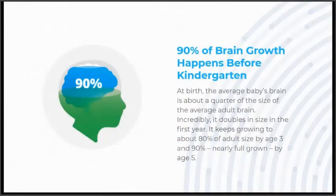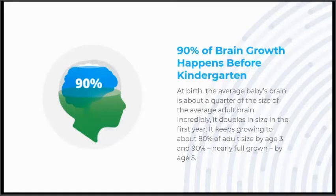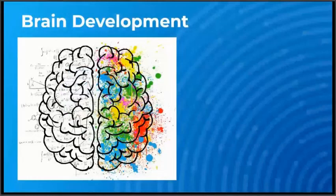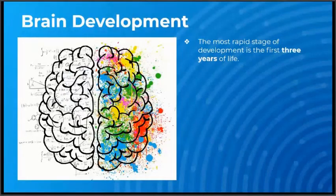90% of brain growth happens before kindergarten. At birth, the average baby's brain is about a quarter of the size of the average adult brain. Incredibly, it doubles in size in the first year. It keeps growing to about 80% of adult size by age 3 and 90% — nearly full grown — by age 5. The most rapid stage of development is the first three years of life.